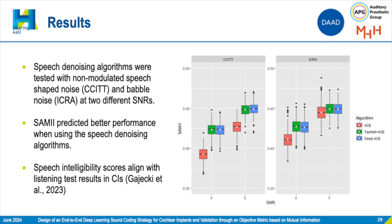We tested the algorithm with two noise sources: the CCITT, which is speech-shaped noise, and ICRA7, which is babble noise. We also compared the performance with TASNET plus ACE, which also implements a denoising algorithm in the front-end, and SAMI always returned higher values for the denoising algorithms, as expected. It was harder for SAMI with the babble noise, though — it might be because ICRA7 uses actual speakers as a noise source, which increases the mutual information between the noise and the target speech signal. Nevertheless, SAMI was capable of reproducing to some extent the results from listening tests, where the benefit of using DeepACE or other denoising algorithms can be seen.